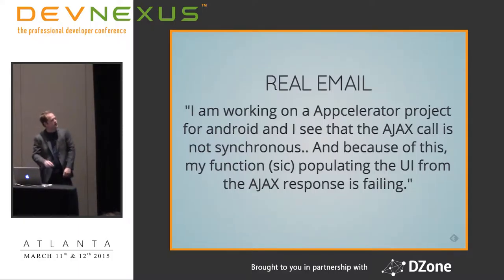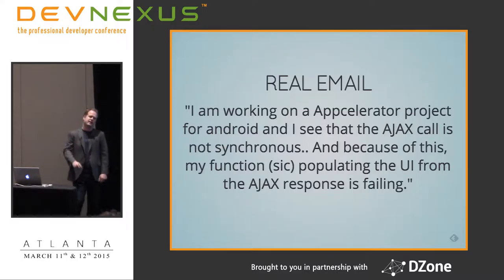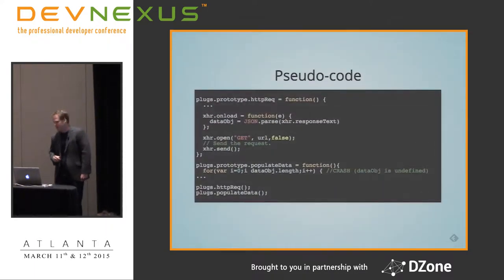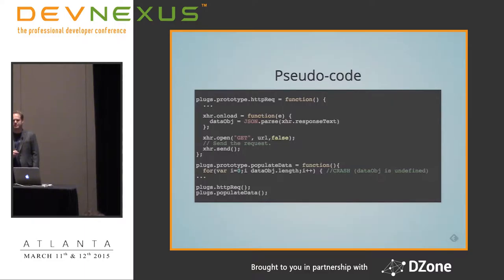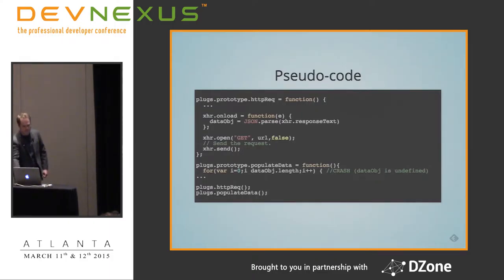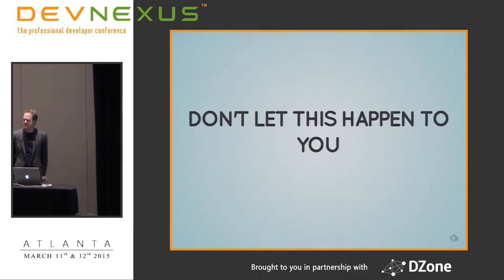Here's a real email I received three months after rolling off a Titanium project. The developer said the Ajax call isn't happening synchronously and it's blowing up the whole app. The first person who can tell me why this is blowing up gets a t-shirt. The answer: the data object isn't going to get populated until onload happens, which is asynchronous, but the code immediately tries to populate data that doesn't exist yet.